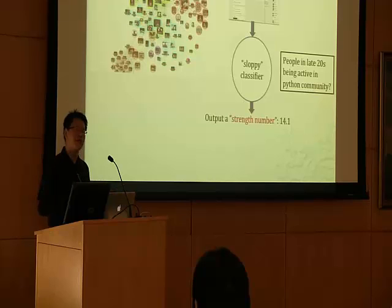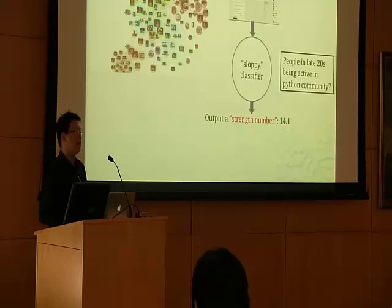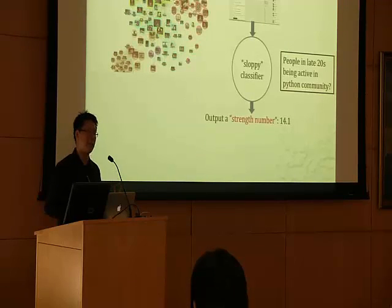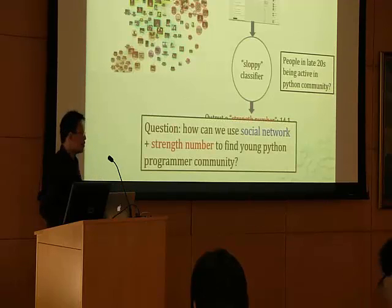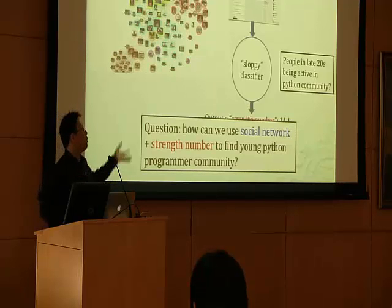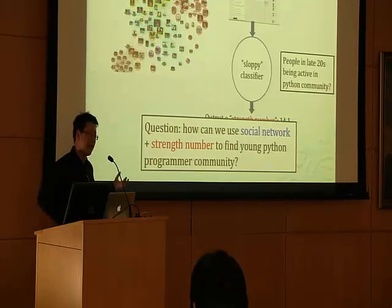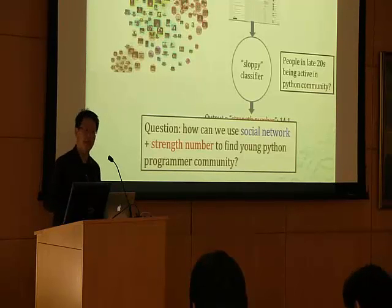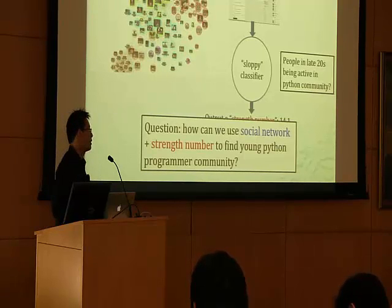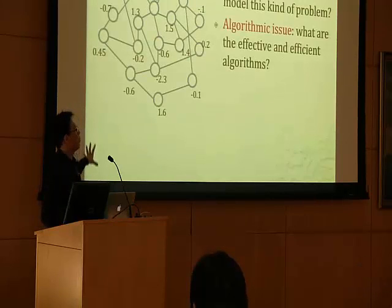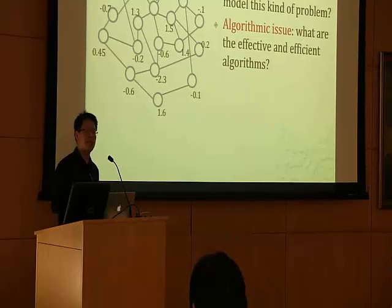On top of that, Facebook may also know some structural information about the community it wants to find. Specifically, it's very likely that the subgraph induced by the people in this community is connected. So the question becomes: if we are given a social network, some numbers output by the classifier, and structural information about the community, can we recover the community? Basically, we are given a graph associated with a set of numbers, and we want to use these two pieces of information to recover the community.